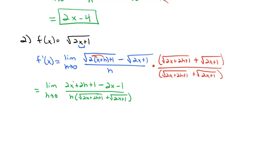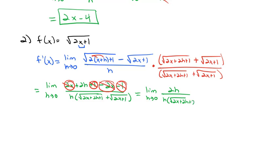Things become nice: 2x minus 2x is 0, and 1 minus 1 is 0. So we just have the limit as h goes to 0 of 2h over h times the square root of 2x plus 2h plus 1 plus the square root of 2x plus 1. The h's divide out, removing the discontinuity.